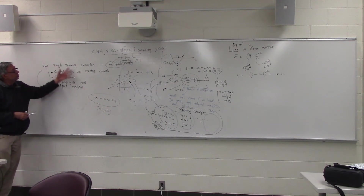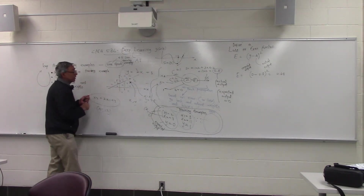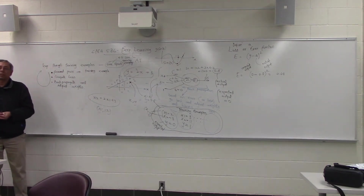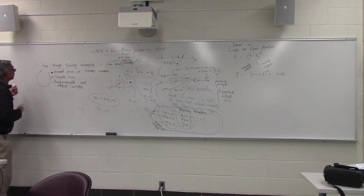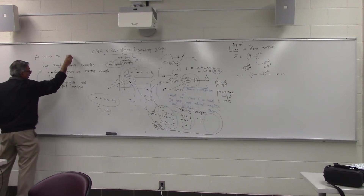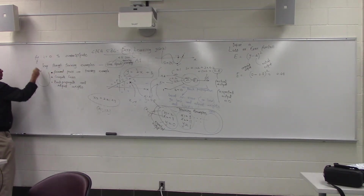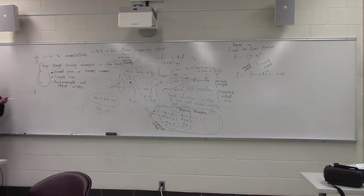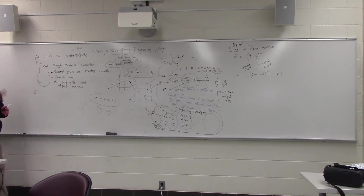Even after going through 1,000 times, will the network have learned the decision boundary y = 2x + 3? The answer is sometimes yes, sometimes no. If we picked initial random weights that were pretty far off, maybe not. So typically, we add an outer loop going from 0 to a number of epochs — say 100 epochs — and see if it keeps getting better as we train.